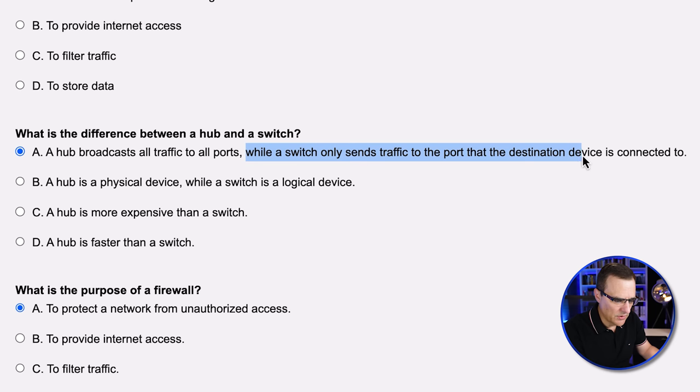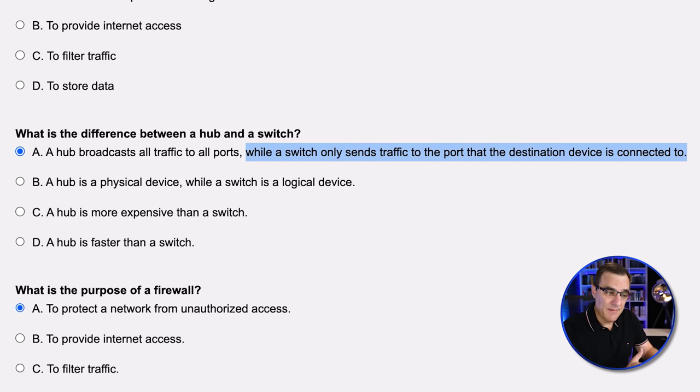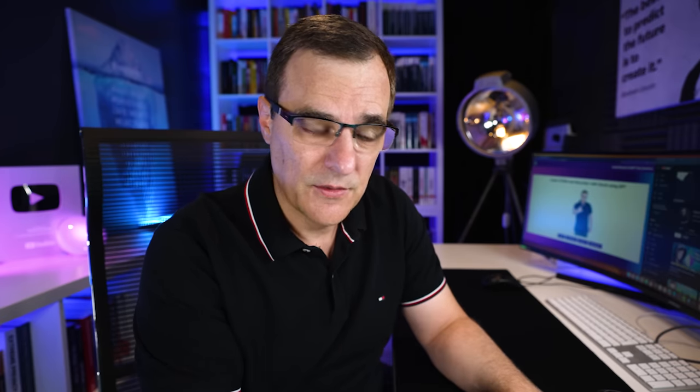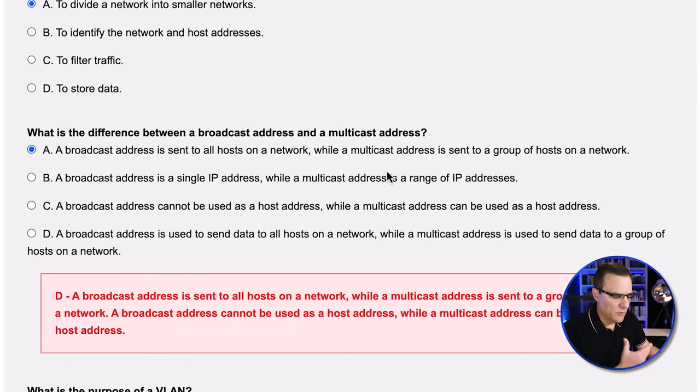A switch only sends traffic to a port if it's a unicast frame and we've learned where the destination MAC address is. But if the switch doesn't know where the destination address is, it will flood the traffic like a hub out of all ports except the port on which it was received. For multicast or broadcast traffic, the traffic is often flooded out of all ports, or out of ports where devices have subscribed to the multicast using a protocol called IGMP. At CCNA level you may not know all those details, so you need to be careful with AI and the questions it gives you.